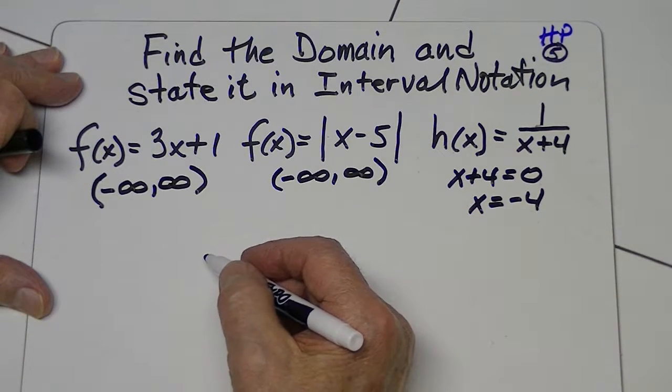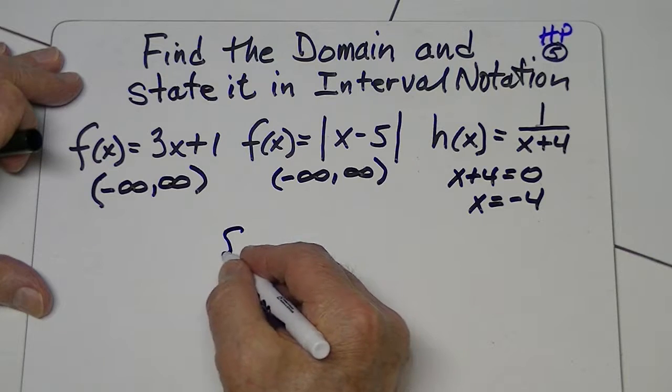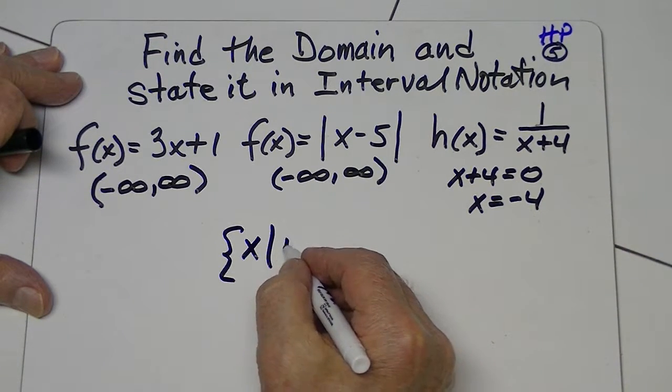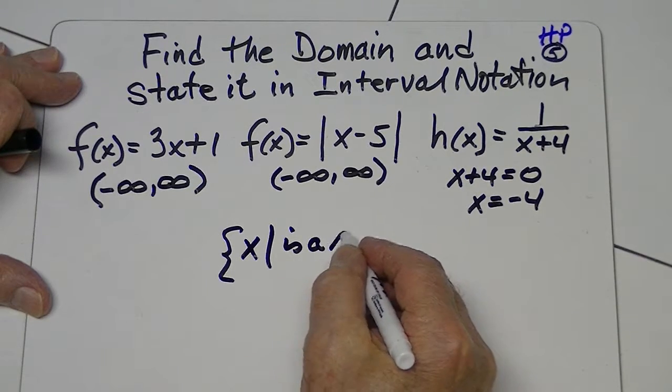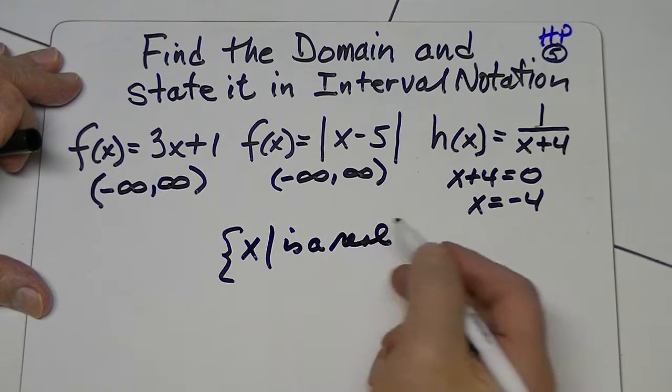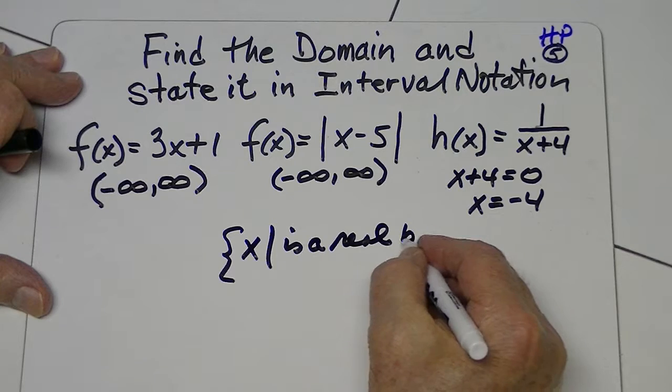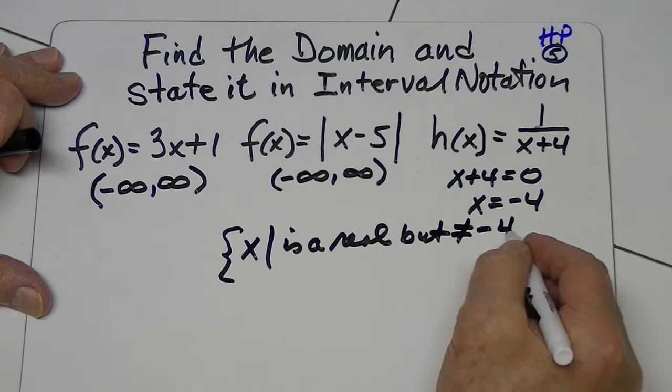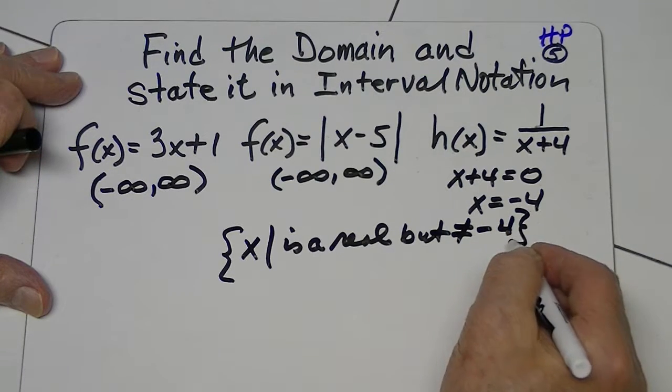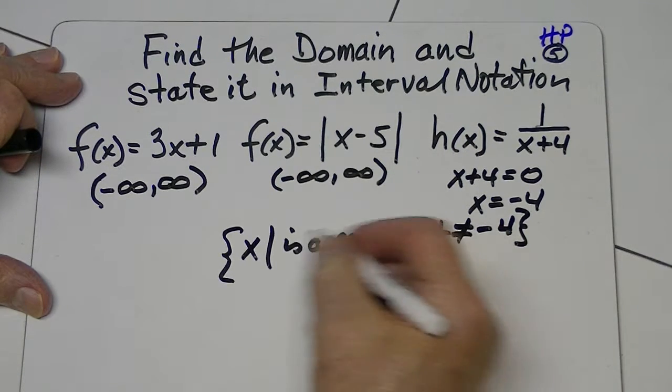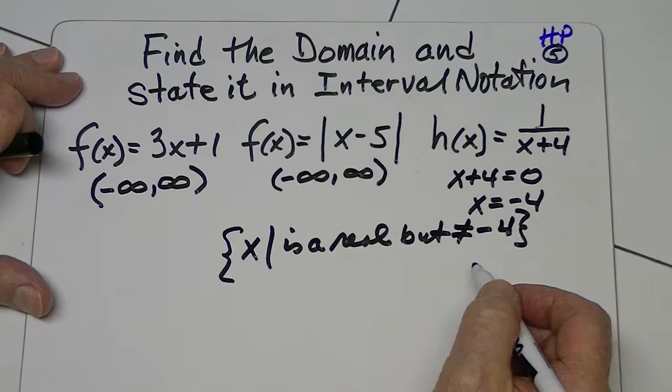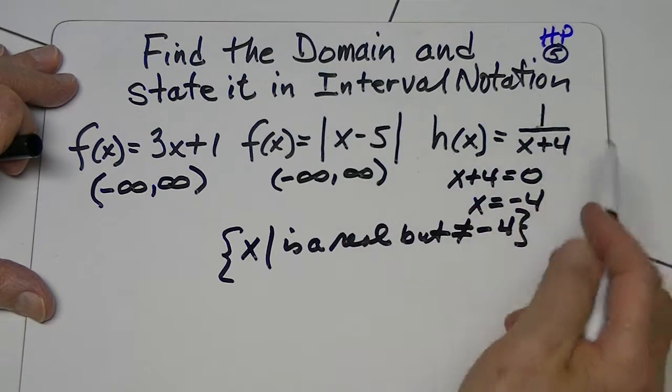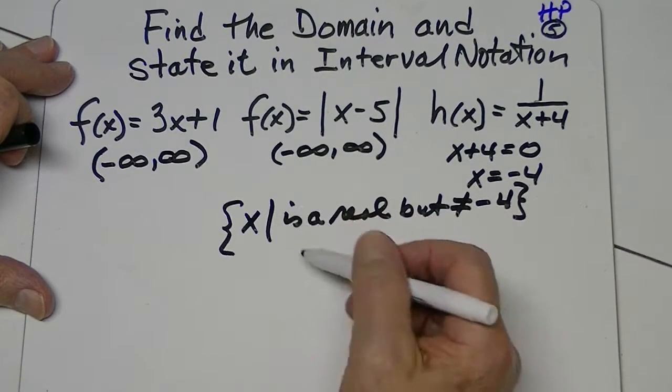You would give this a couple of ways. Now in roster notation, you'd say that, and again just reviewing this, x is such that x is a real number, any real number, but cannot be negative four. So that's one way of putting it. Now they ask, actually, that you put it in interval notation. So let's do that.